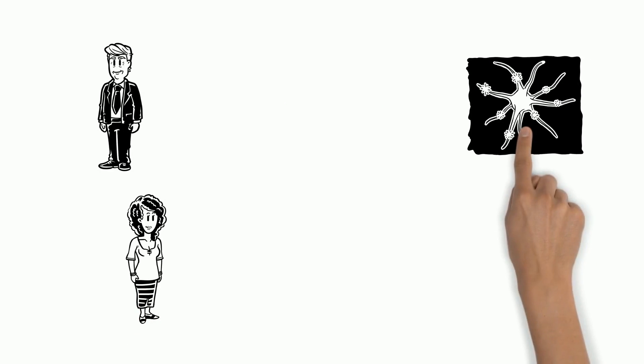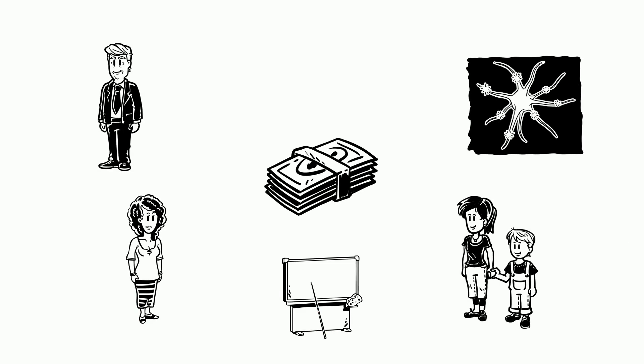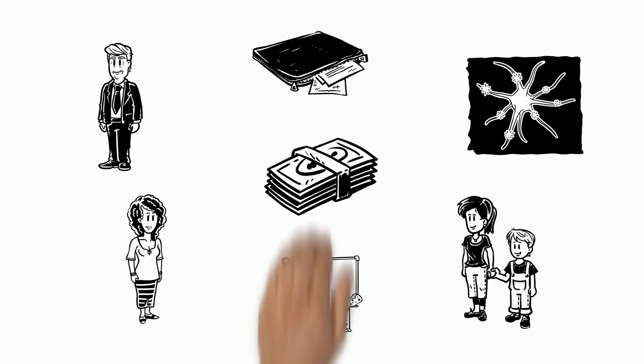Kiyosaki and Trump believe that the school system is not teaching kids about money, but instead teaching them how to work for money.